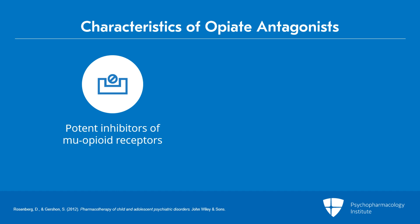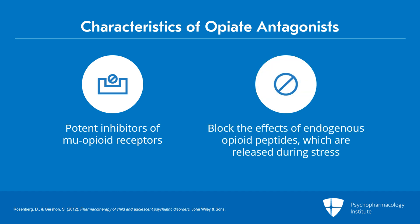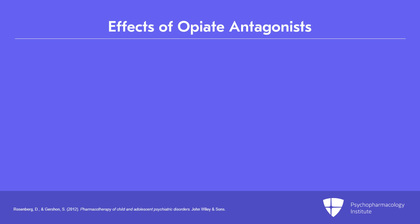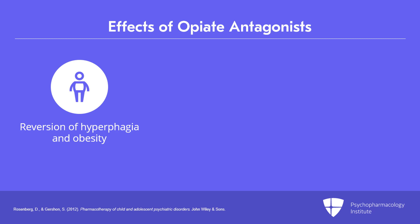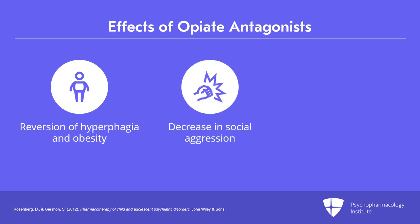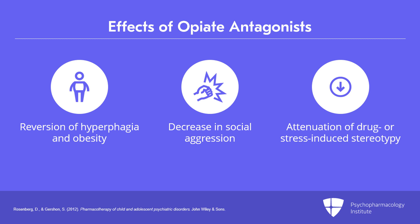Endogenous opioid peptides, such as endorphins and enkephalins, are present naturally in the brain and are released during times of physical pain or stress. Opiate antagonists block these effects, and this blockade is the mechanism through which their psychiatric effects are derived. Opiate antagonists have been observed to reverse hyperphagia and obesity, decrease social aggression, and attenuate drug- or stress-induced stereotypy associated with elevated endogenous opiate levels.